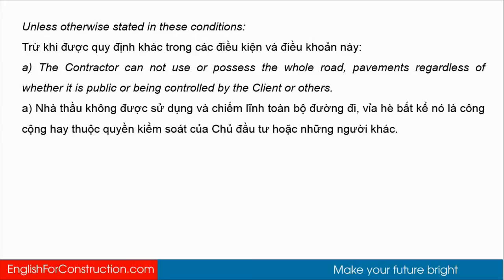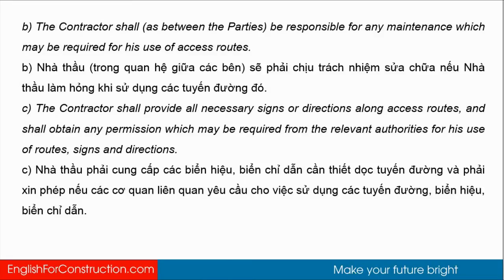Unless otherwise stated in these conditions: (a) The contractor cannot use or possess the whole road pavement, regardless of whether it is public or being controlled by the clients or others. (b) The contractor should be responsible for any maintenance which may be required for his use of access routes. (c) The contractor should provide all necessary signs or directions along access routes, and shall obtain any permissions which may be required from the relevant authorities for his use of routes, signs and directions.